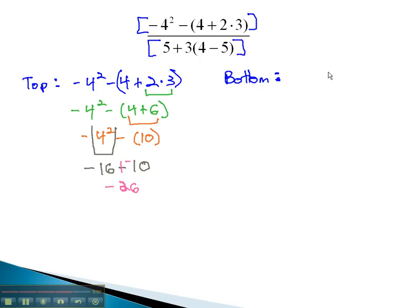Let's look at the bottom. The bottom was 5 plus 3 times 4 minus 5. Doing the parentheses first, we get 5 plus 3 times negative 1. Next, order of operations asks us to multiply the 3 times negative 1, giving us 5. And 3 times negative 1 is negative 3.